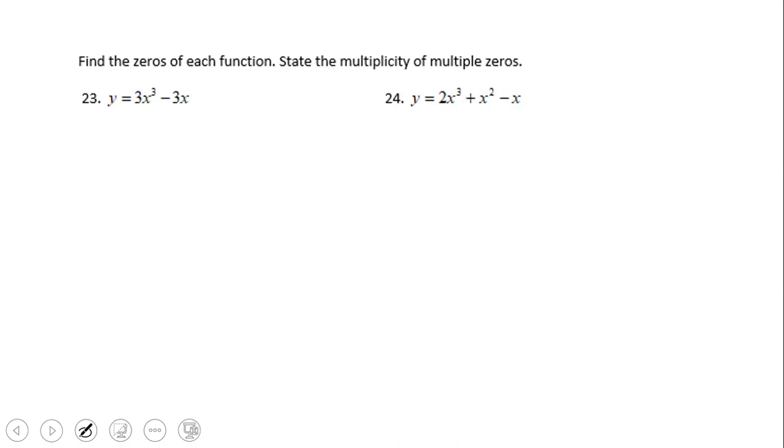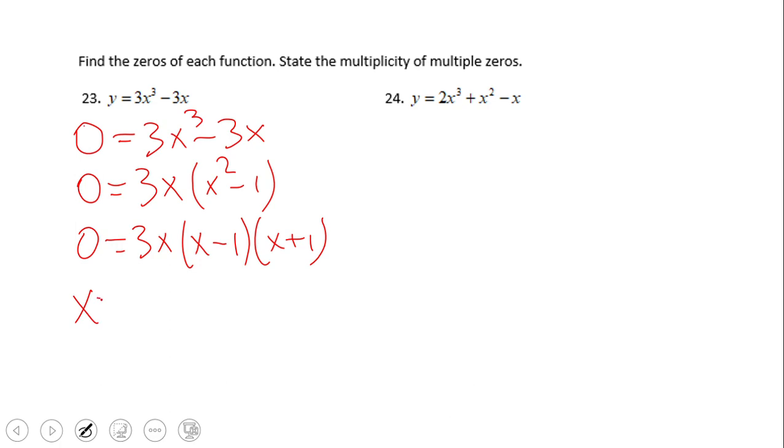Let's take a look at number 23. Again we're going to make zero equals 3x cubed minus 3x—again a polynomial equation, but we need to write the factored form. Now the GCF is 3x, and then we have x squared minus one. And x squared minus one is the difference of squares, we can factor it out as x minus one times x plus one.